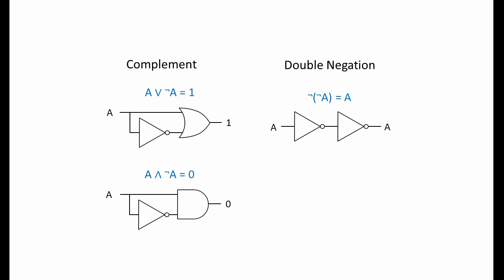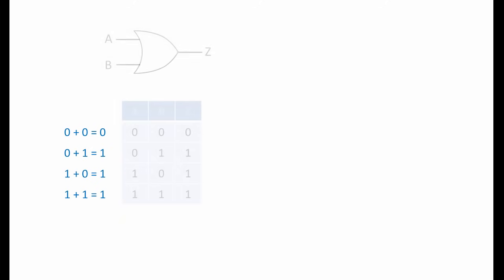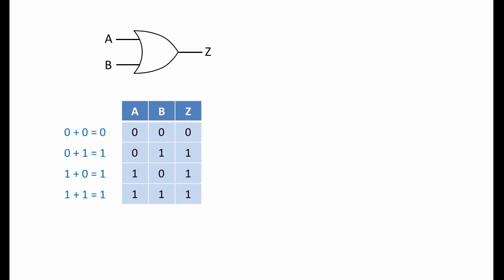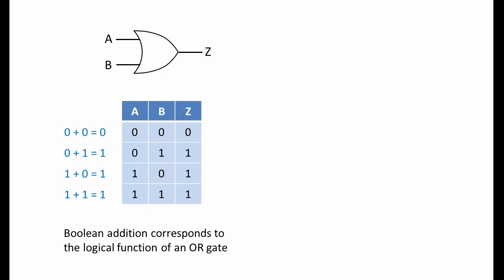Before continuing, let's take a look at the concepts of Boolean addition and Boolean multiplication. Consider this: 0 plus 0 equals 0; 0 plus 1 equals 1; and 1 plus 0 also equals 1. In Boolean logic there is only true and false, and a logic gate deals with binary 1s and 0s only. So when it comes to 1 plus 1, it must equal something — and that certainly isn't 0. So 1 plus 1 equals 1. In fact, logically speaking, 1 plus 1 plus 1 plus 1 plus 1 equals 1. Look at the similarity between these addition sums and the truth table for an OR gate — Boolean addition corresponds to the logical function of an OR gate.